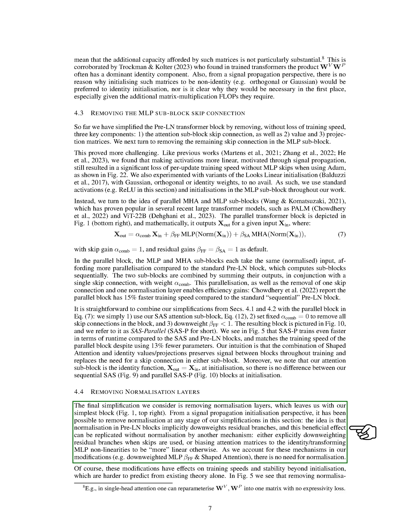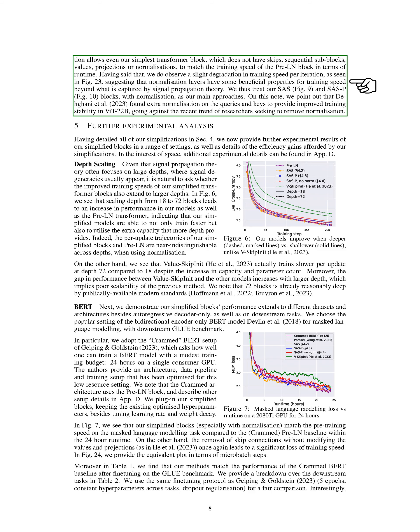Next, we considered removing normalization layers, which resulted in our simplest block. From a signal propagation initialization perspective, it's possible to remove normalization at any stage of our simplifications. The idea is that normalization in pre-LN blocks implicitly reduces the weight of residual branches, and this beneficial effect can be replicated without normalization by either explicitly reducing the weight of residual branches when skips are used, or biasing attention matrices to the identity, or transforming MLP non-linearities to be more linear. As we account for these mechanisms in our modifications, there is no need for normalization. However, removing normalization allows even our simplest transformer block — without skips, sequential sub-blocks, values, projections, or normalizations — to match the training speed of the pre-LN block in terms of runtime. We did notice a slight decrease in training speed per iteration, suggesting that normalization layers have some beneficial properties for training speed beyond what is captured by signal propagation theory.